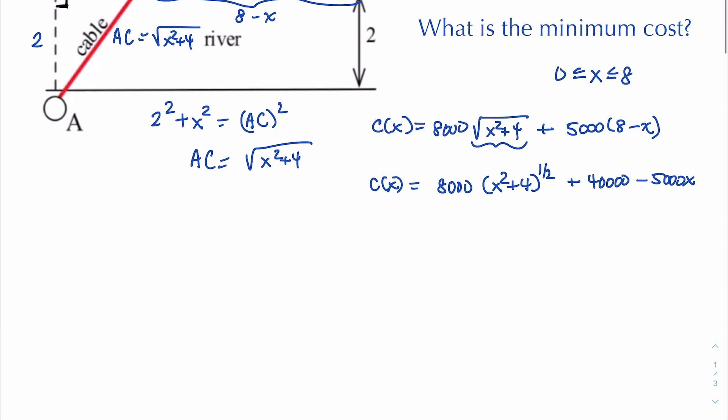Okay so now we're ready to take the derivative. So c prime is, okay so 8,000 times something with the power rule. So it's 8,000 times a half which is 4,000 times the something to the negative half times the derivative of the inside. The derivative of 40,000 is 0 and the derivative of minus 5,000x is minus 5,000.